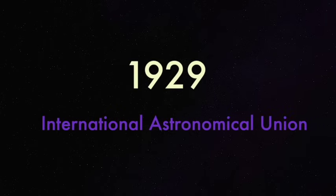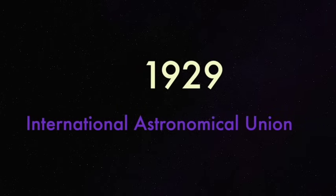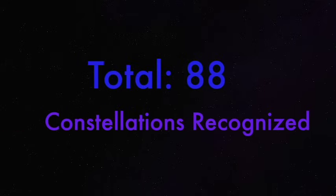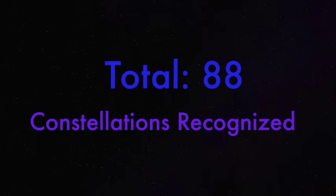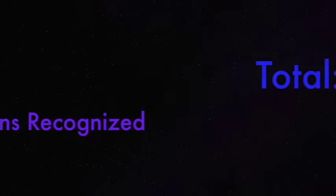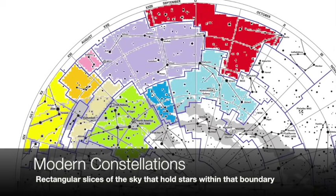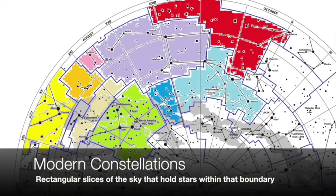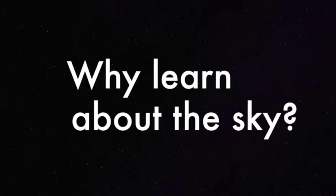To eliminate confusion, the International Astronomical Union gathered together in 1929 to solidify the boundaries of the constellations. Today, 88 constellations are universally recognized. Remember, constellations are rectangular slices of the sky that hold stars within that boundary.